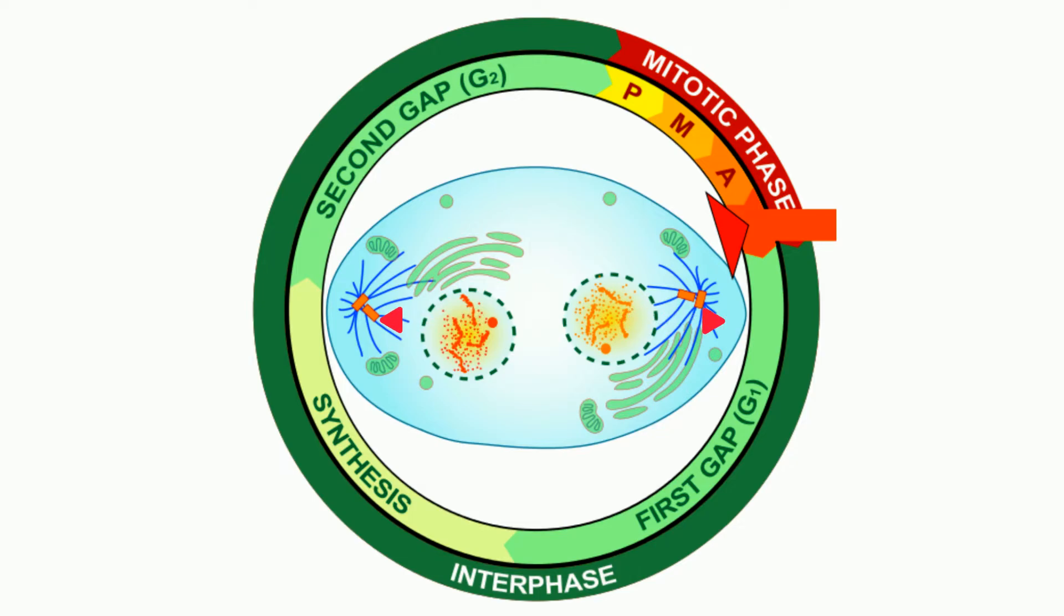A new nuclear membrane forms around the two sets of daughter chromosomes, and this creates two separate nuclei inside the same cell. The cell will also continue to elongate.